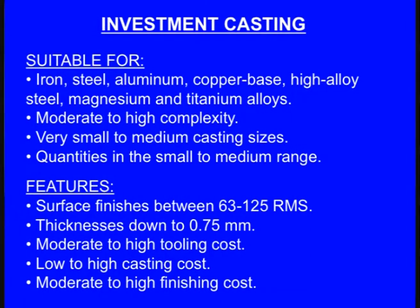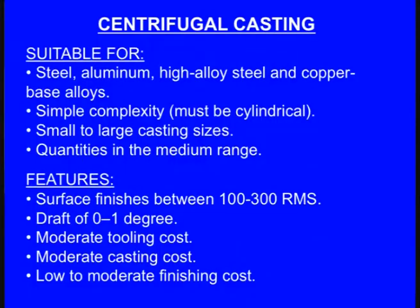Investment casting features: surface roughness is 63 to 125 RMS. Thin sections as thin as 0.75 mm can be cast. Tooling cost is moderate to high, casting cost is low to high, and finishing cost is moderate to high. Centrifugal casting is suitable for steel, aluminum, high alloy steels, and copper base alloys. It offers simple complexity and components must be axisymmetrical. Small to large casting sizes and quantities in the medium range. Surface roughness is 100 to 300 RMS, draft is 0 to 1 degree, moderate tooling cost, moderate casting cost, and low to moderate finishing cost.